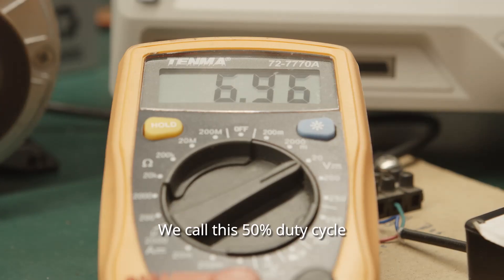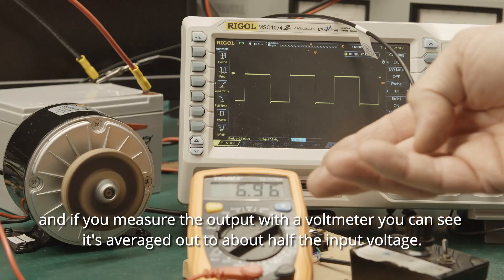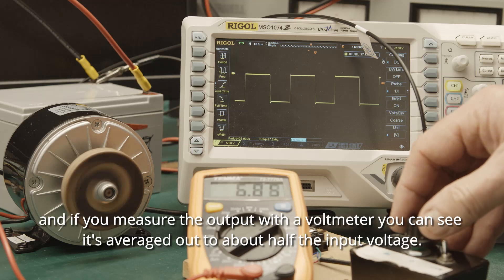We call this 50% duty cycle. And if you measure the output with a volt meter, you can see that it's averaged out to about half the input voltage.